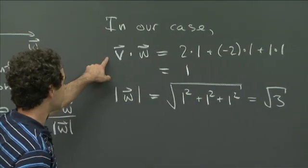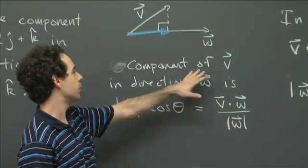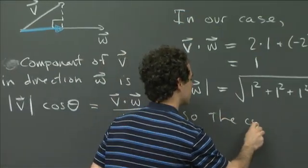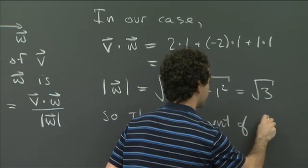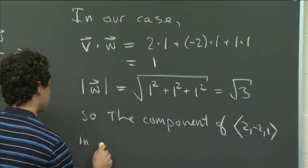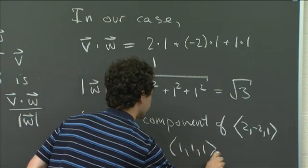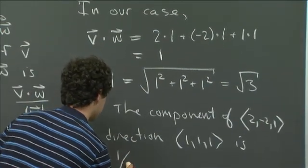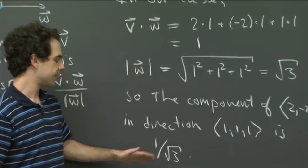So we've got v dot w, and we have the length of w. And so then we just need to put them right into this formula, that the component of v in the direction of w is given by this expression. So the component of, I'm not going to write it out with i's, j's, and k's. I'm going to write 2 minus 2, 1 in direction 1, 1, 1, is, well, we just have to divide the dot product by the length of the direction vector. So that's 1 divided by the square root of 3.